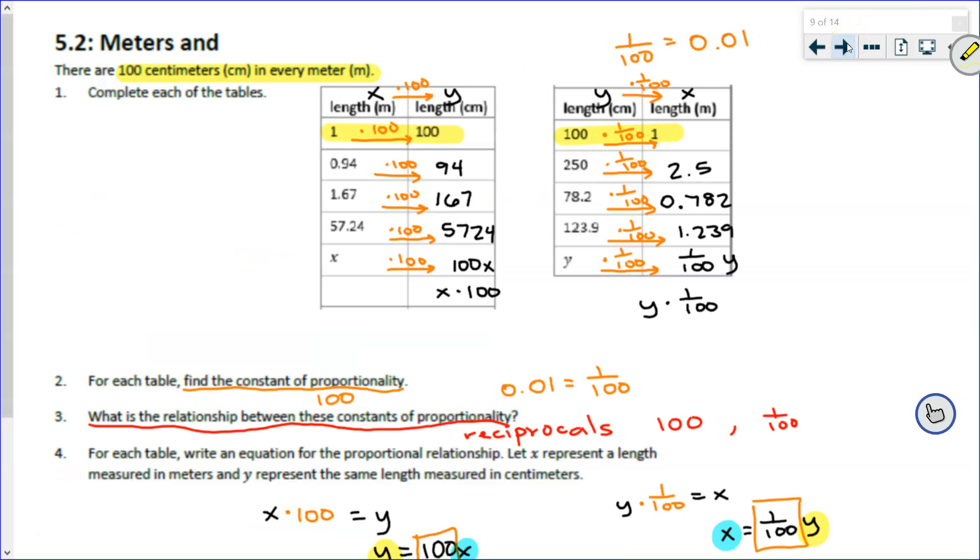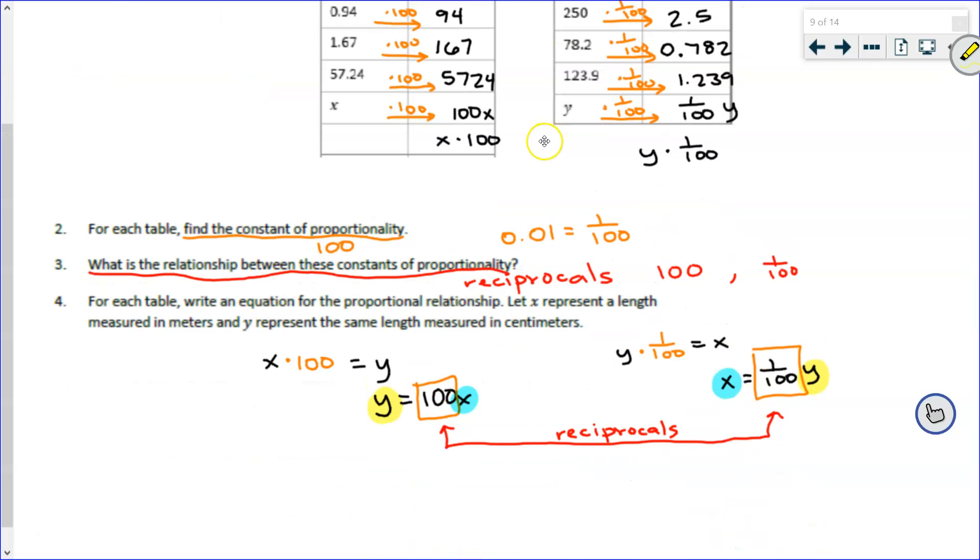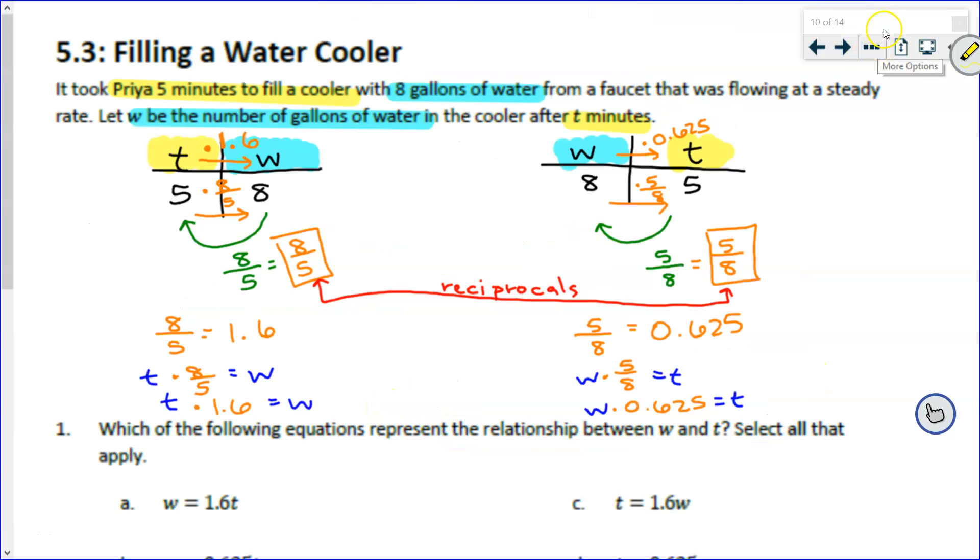You'll remember in our last video, we practiced writing two different equations for the same information. Here we had meters and centimeters, then we switched those columns and had centimeters and meters. When we wrote equations for each of them, we noticed how very similar those equations were. One of the main differences is the constant of proportionality were reciprocals. Some other differences we noticed are that the x and y switch places.